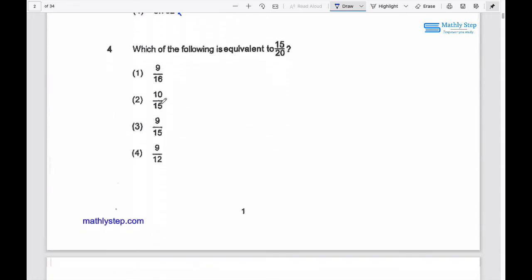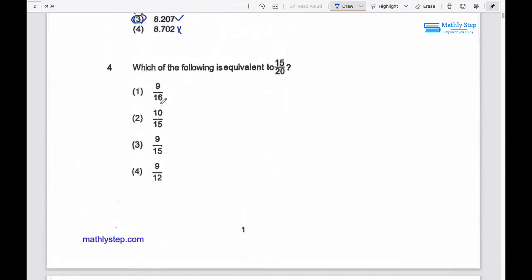Question 4: Which of the following is equivalent to 15 over 20? So simplify. 15 divided by 5 equals 3, 20 divided by 5 is 4.